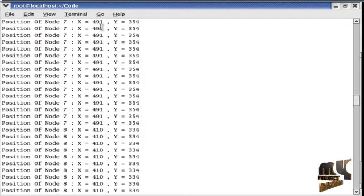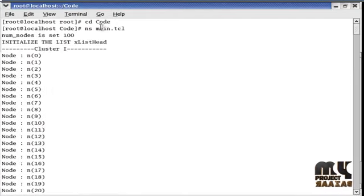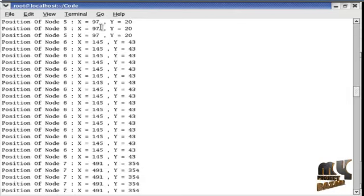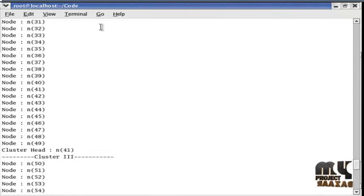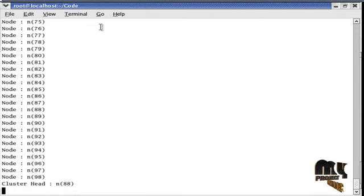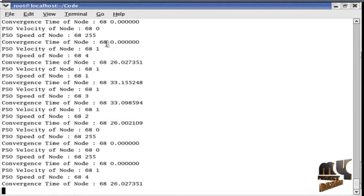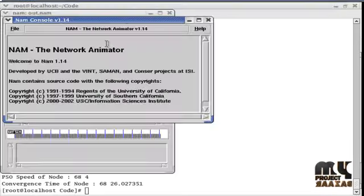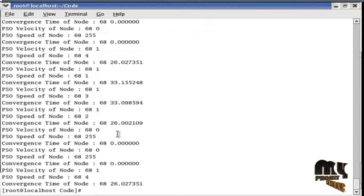So the coding is running. In this process we implement randomly 100 nodes deployed and the position of each node is found. And the clustering is done and cluster head is selected. After the cluster head selection, the PSO implementation is done here. The PSO algorithm is used to find the node velocity, speed, and energy of each node.